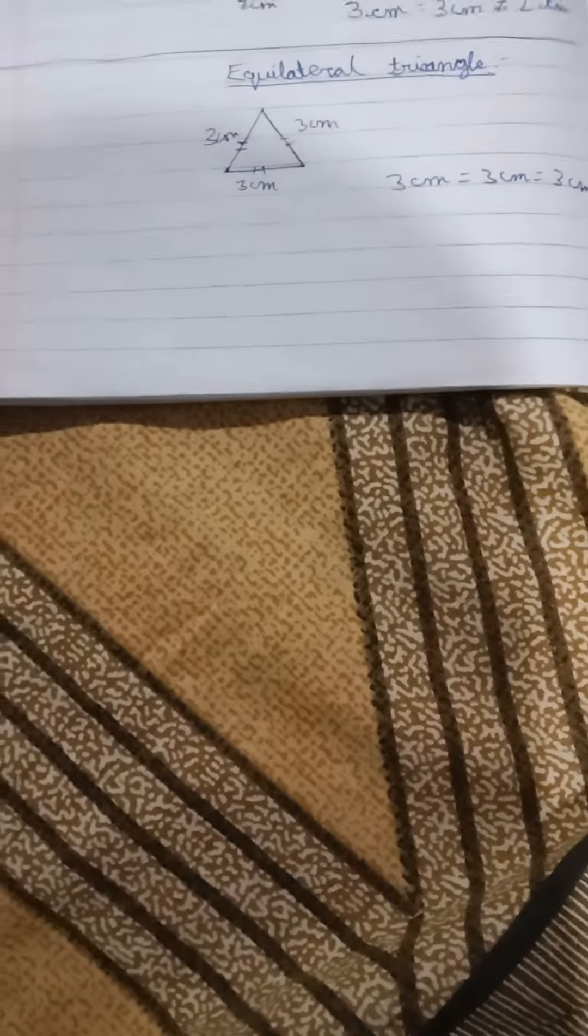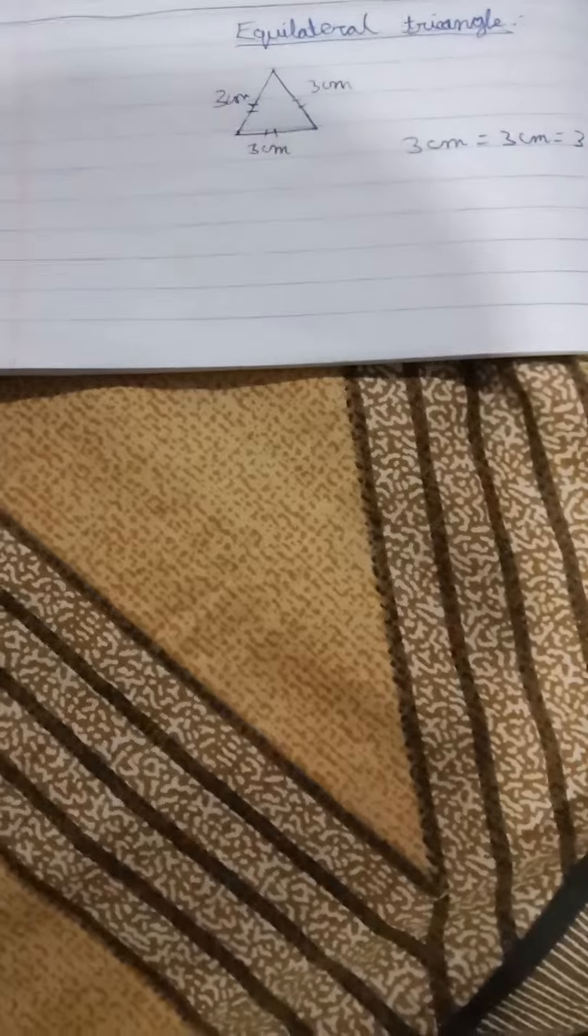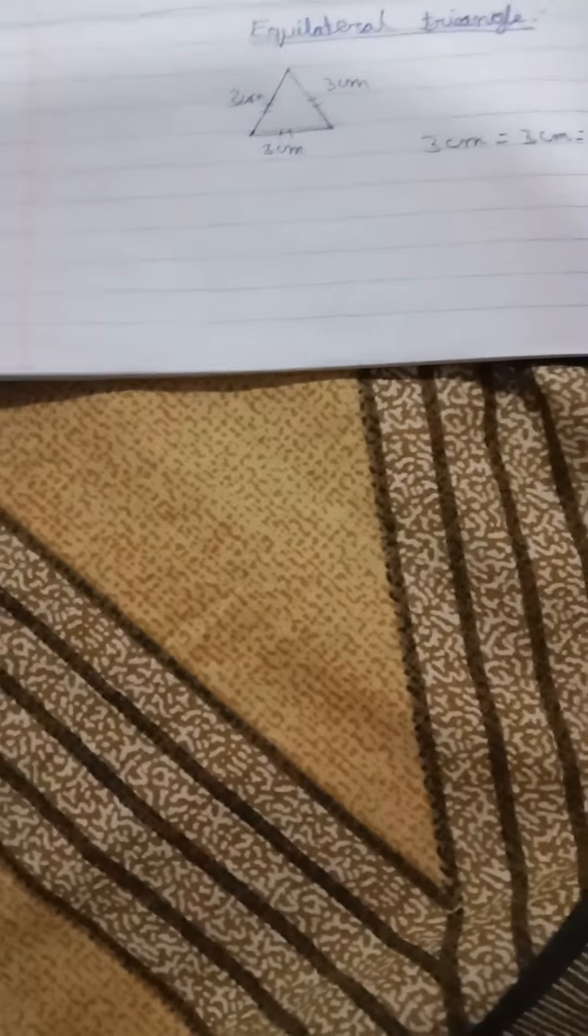Hello friends, welcome to Children's Classes. Today I'm going to explain what is an equilateral triangle. First, we'll see the definition. A triangle with all sides equal in length is called an equilateral triangle.